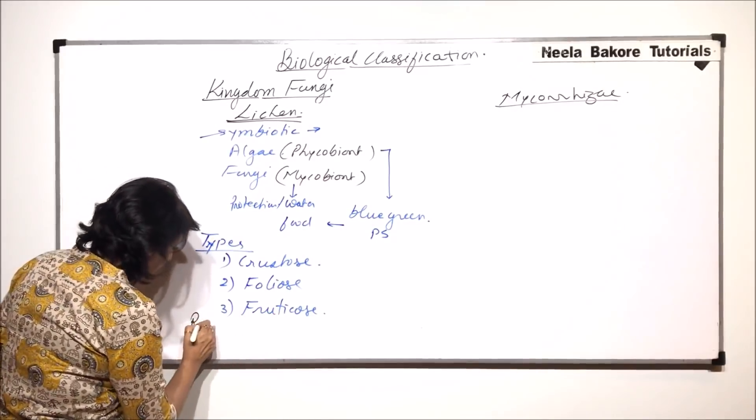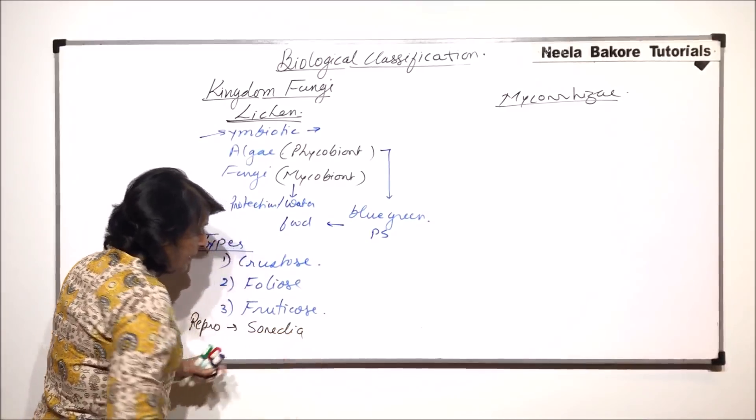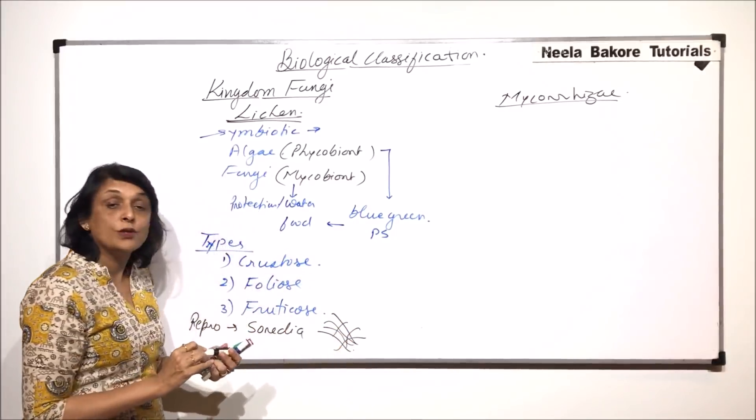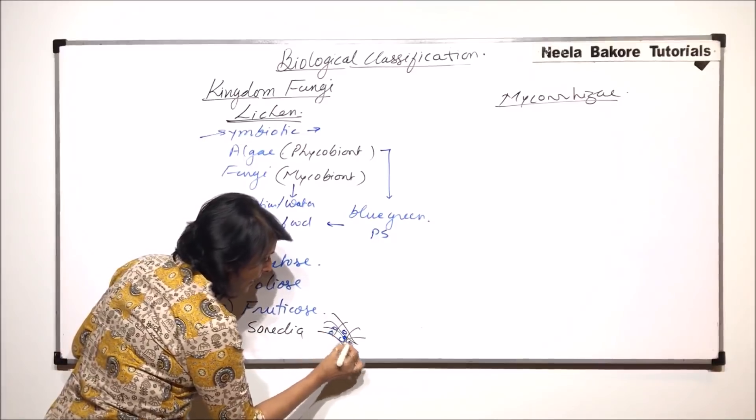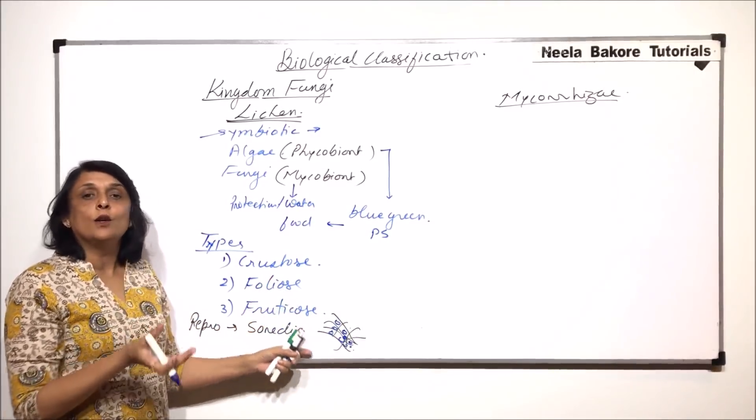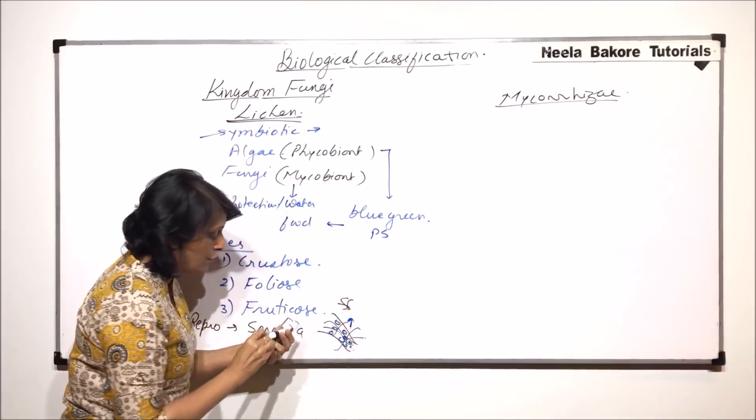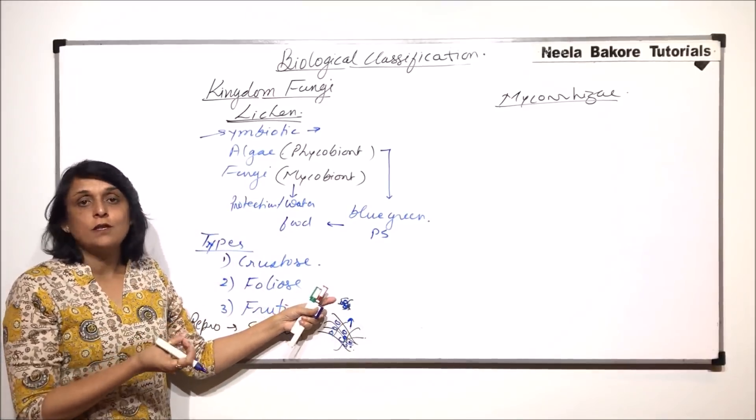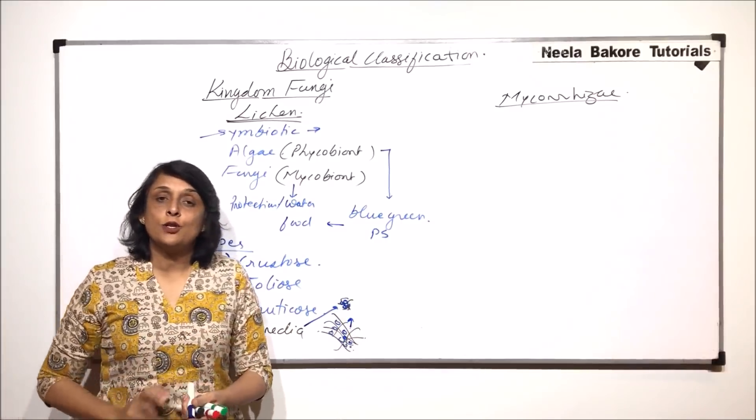Reproduction takes place by formation of small structures which are known as soredia. If we draw the structure of a lichen, there is no organized structure, it is just a lump-like thing with blue-green algae in between fungal hyphae. During reproduction, few hyphae and few cyanobacteria get separated and lie on a suitable surface where they start to grow. These structures are the soredia.